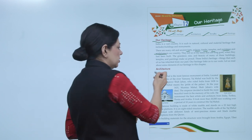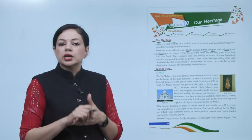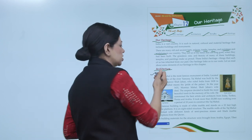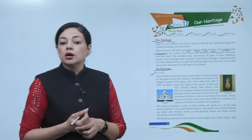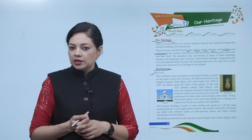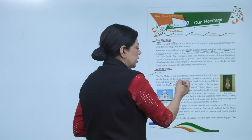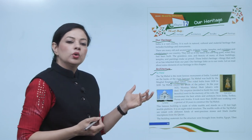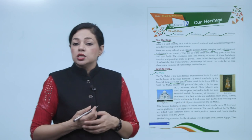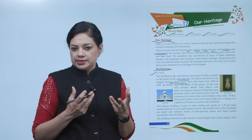First is architecture. India ki jo rich heritage hai, us mein architecture is the main — architecture yani ki buildings. Building mein sab se pehle hai Taj Mahal. Taj Mahal is the most famous monument of India. Located on the banks of the river Yamuna, Taj Mahal was built by Mughal Emperor Shah Jahan. Yamuna river per located hai, Mughal Emperor Shah Jahan ne banaya tha. Taj Mahal means the pride of the palace.